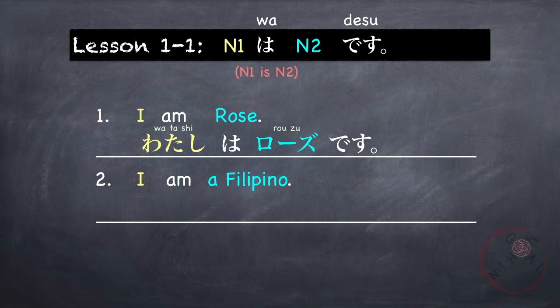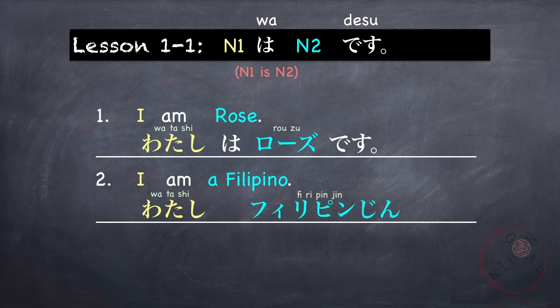Another example: I am a Filipino. Again, I is watashi. A Filipino is Firipin-jin. Firipin is Philippines, and jin is a suffix added to a country name to indicate that you are a national of that country. So the full sentence is: Watashi wa Firipin-jin desu. I am a Filipino.